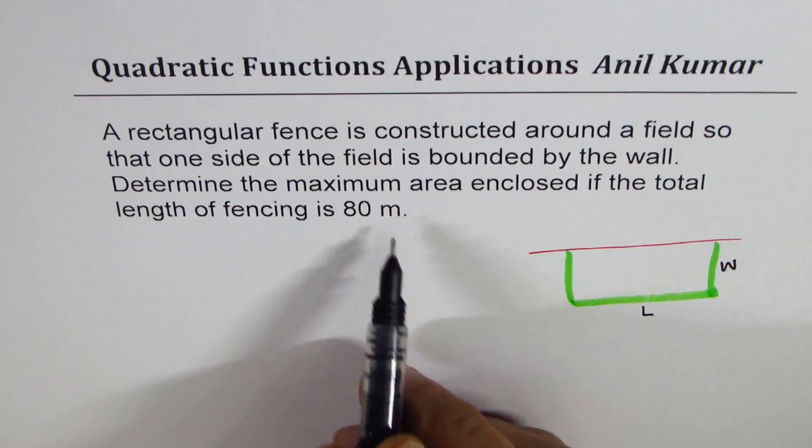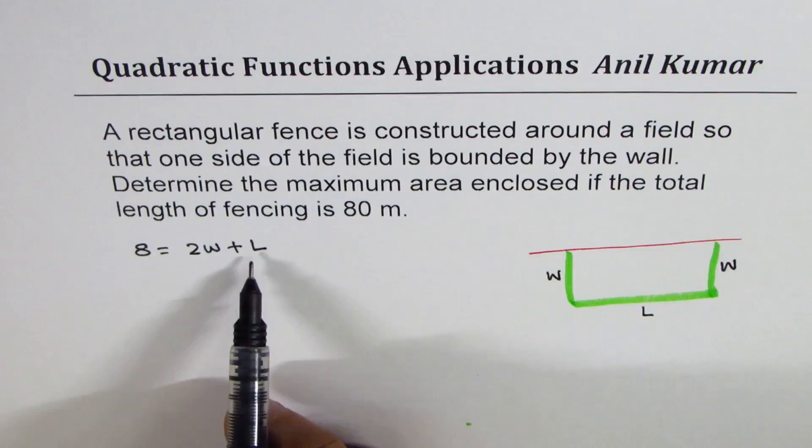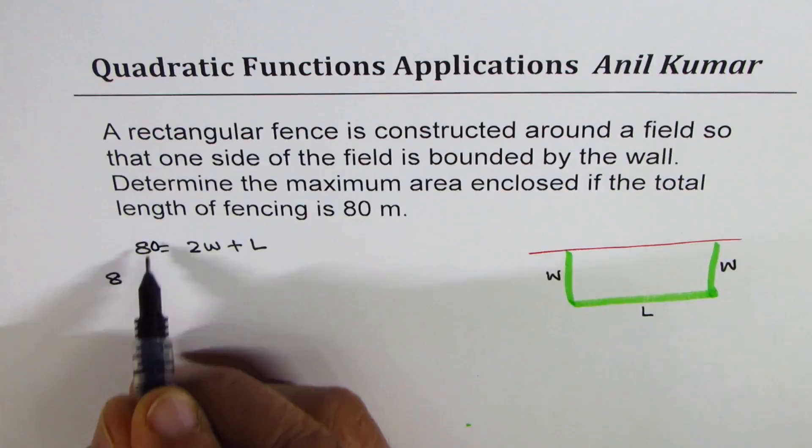Since we know that perimeter of the fence—this green color represents the fence—is maximum 80 meters, we know 80 equals 2W plus L. Now this equation helps to write length in terms of width, so we can write 80 minus 2W equals L.